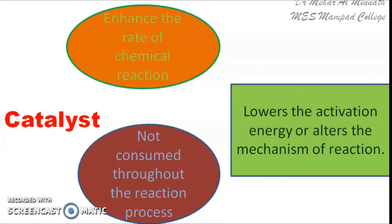This is carried out by the catalyst either by lowering the activation energy of the reaction or by altering the mechanism of the reaction — these are the two ways by which a catalyst increases the rate of reaction. The process of increasing the rate of reaction using a catalyst is called catalysis. When you use a phase transfer catalyst, we call this phase transfer catalysis.